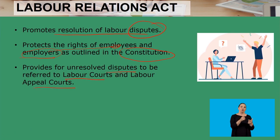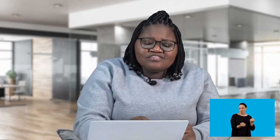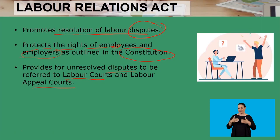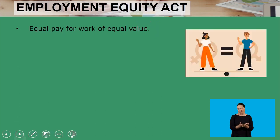The Labour Relations Act provides for unresolved disputes to be referred to the Labour Courts and the Labour Appeal Courts. The process starts with the CCMA. If you are not happy with the CCMA outcome, you take it to the Labour Court. From the Labour Court you can go to the Labour Appeal Court. It is the Labour Relations Act that guides us through this process.